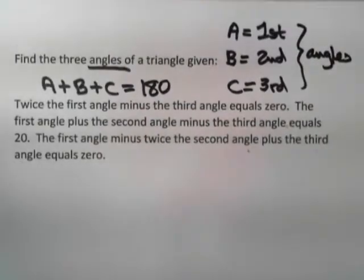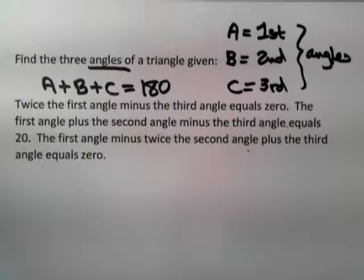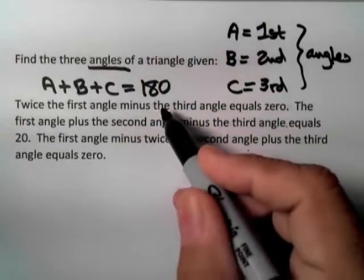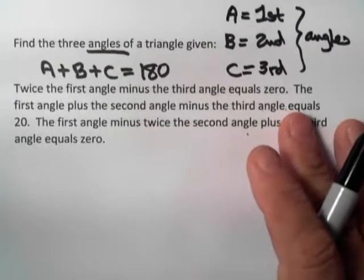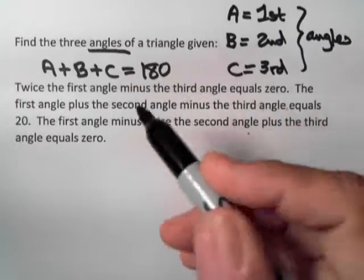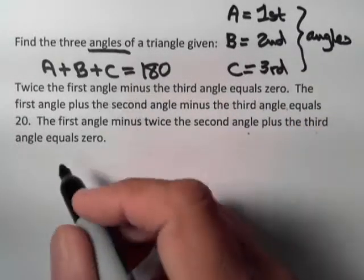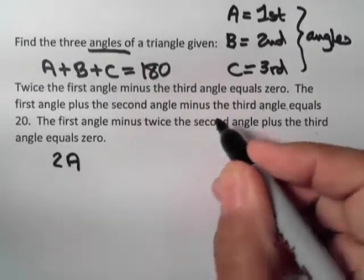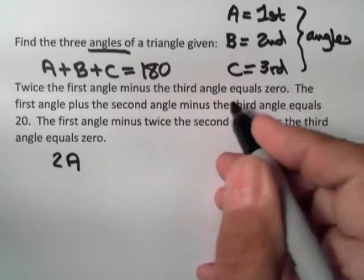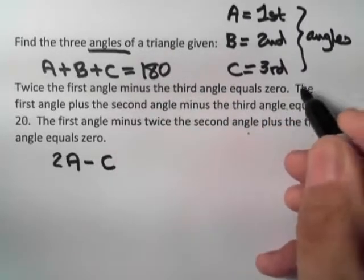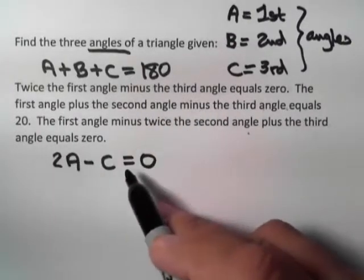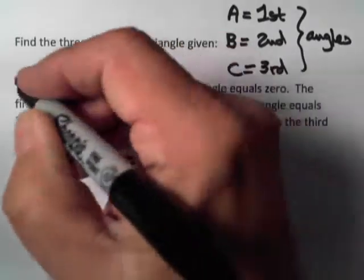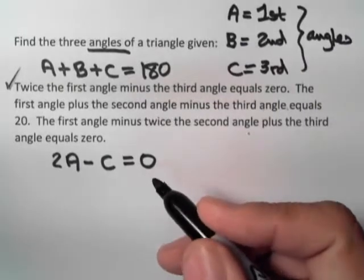That sum-to-180 equation is seldom told to you — this is something you remember whenever you're talking about the angles of a triangle. Now let's translate the other information. Twice the first angle, which is 2A, minus the third angle, which is minus C, equals zero. Notice they didn't mention the second angle here, so it's left out.